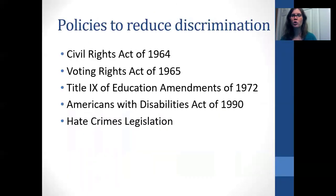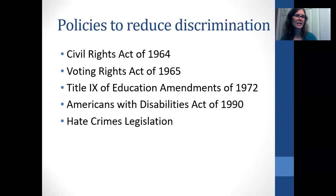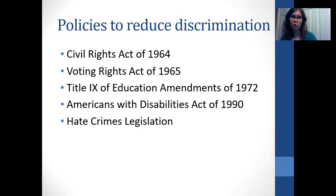There have been different efforts to reduce discrimination through legislation. The one individuals are probably most familiar with is the Civil Rights Act of 1964, which put into law that you cannot discriminate against certain groups — called protected classes. The original act prohibited discrimination based on race, color, religion, sex, or national origin. Subsequent laws also made it illegal to discriminate based on age, disability status, and veteran status. Different states have extended protections to additional groups.